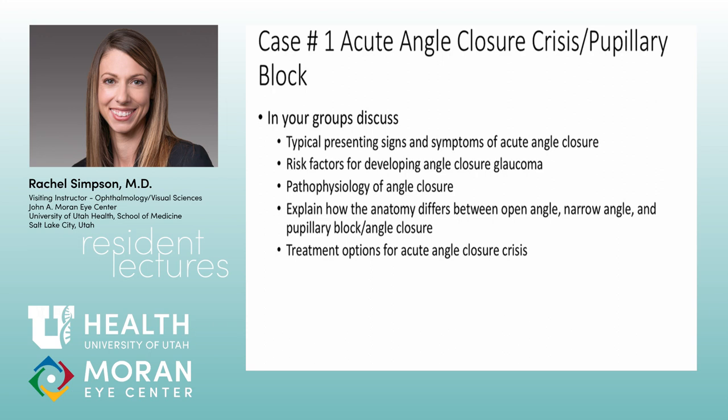In a short eye there's less space overall, making it more likely for the iris to touch the lens. Age, female sex, Asian or Pacific Islander descent, family history, and use of anticholinergics or medications like Topamax are all risk factors that can precipitate angle closure. Darkness also dilates the pupil toward that mid-dilated danger zone, which is why patients often get attacks in dark conditions or when laying prone.